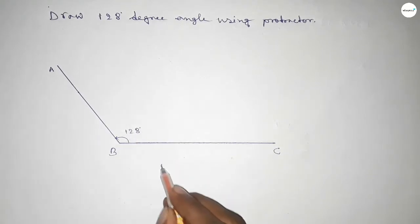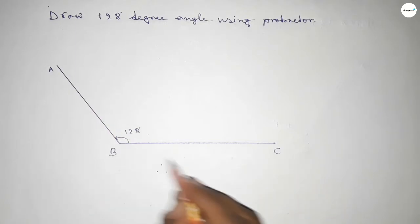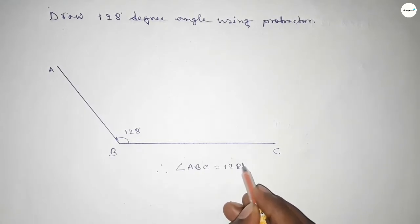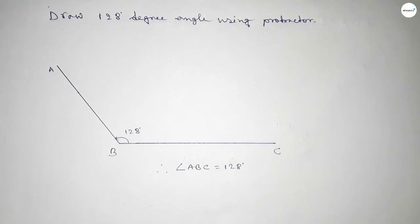Therefore, angle ABC equals 128 degrees. That's all, thanks for watching. If this video is helpful to you, then please share it with your friends.